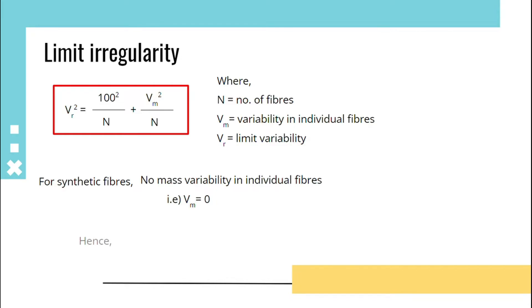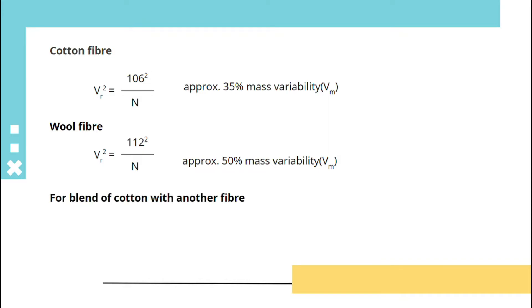For cotton fiber, V_r² = 106²/N, that is approximately 35% mass variability. For wool fiber, V_r² = 112²/N, that is approximately 50% mass variability. And for blend of cotton with another fiber, V_r² = 108.8²/N.